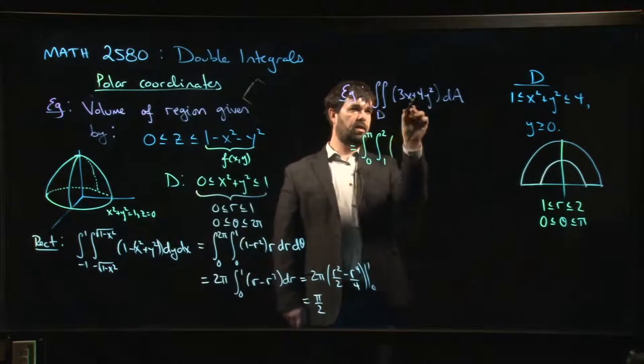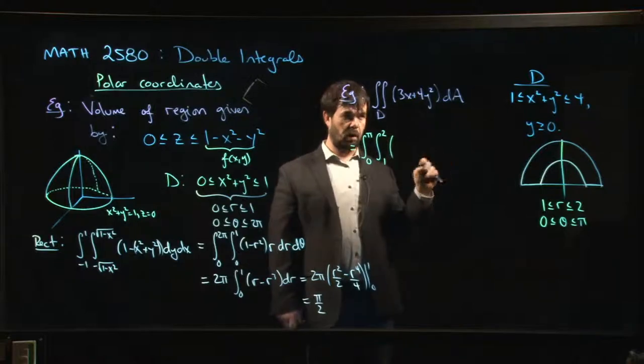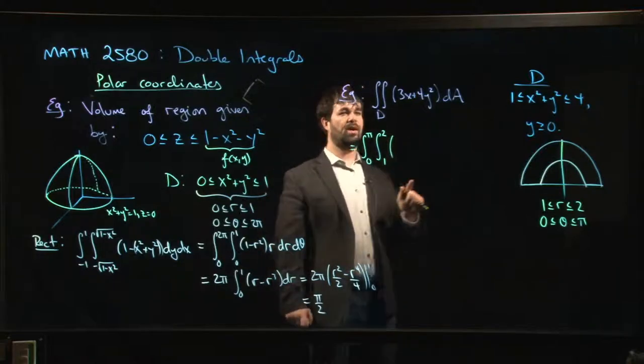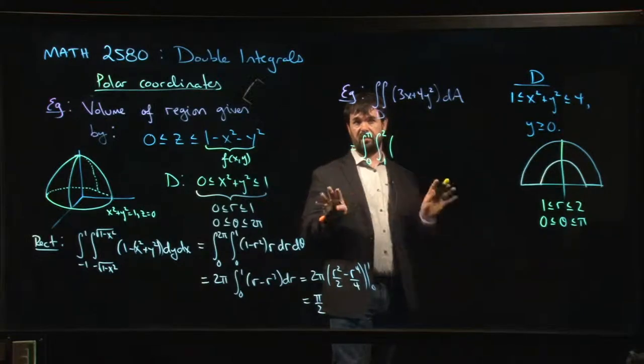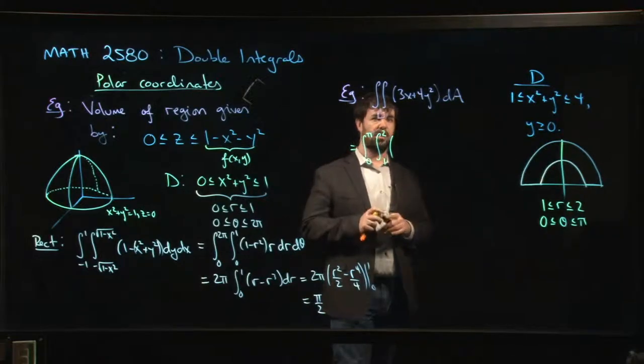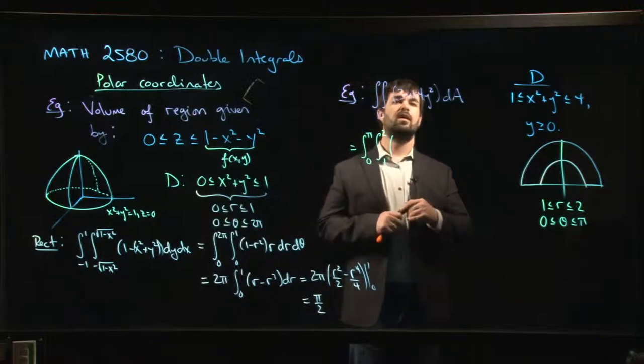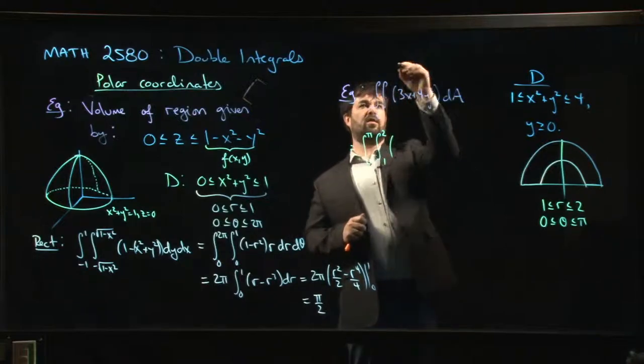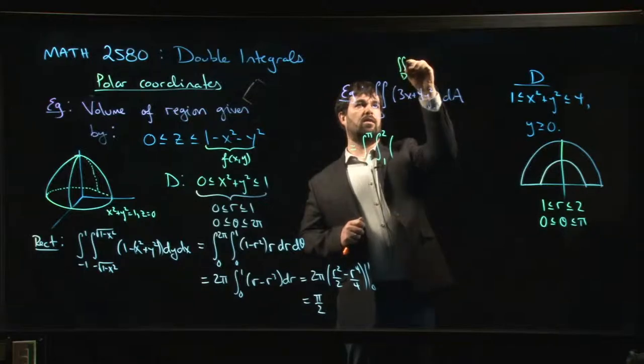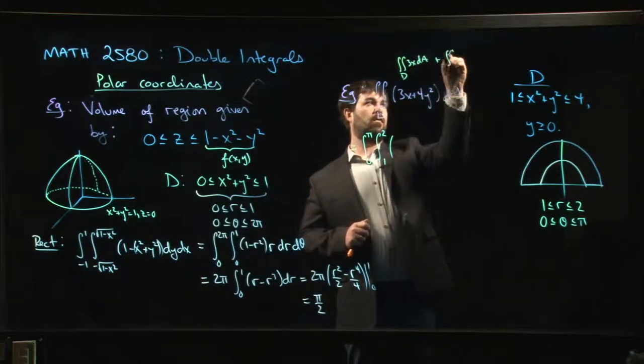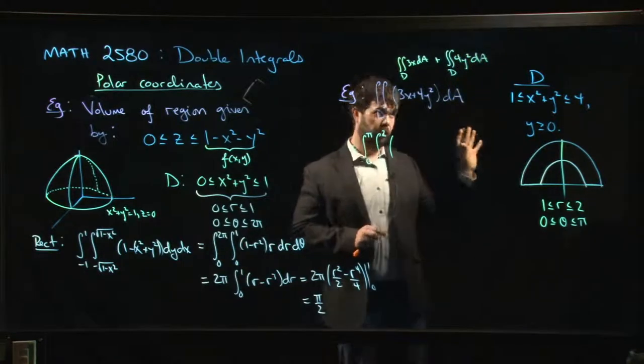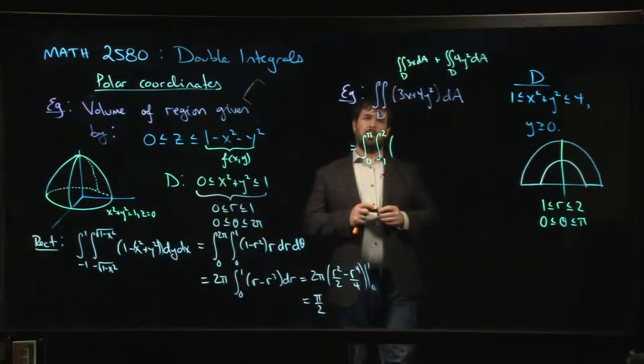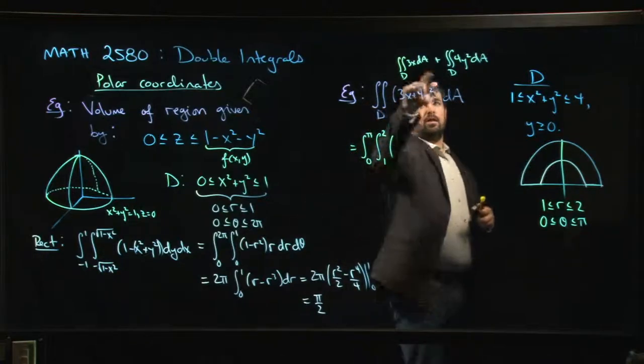And now I do have to deal with the integrand. So x is what in polar coordinates? Oh, actually, do I even bother with the x? Here's something that if you want to be a little bit clever, you can think of this as there's two integrals here. There's this one, and remember, this is a property of integrals. We can do that. So we might ask, what's the value of that first integral?